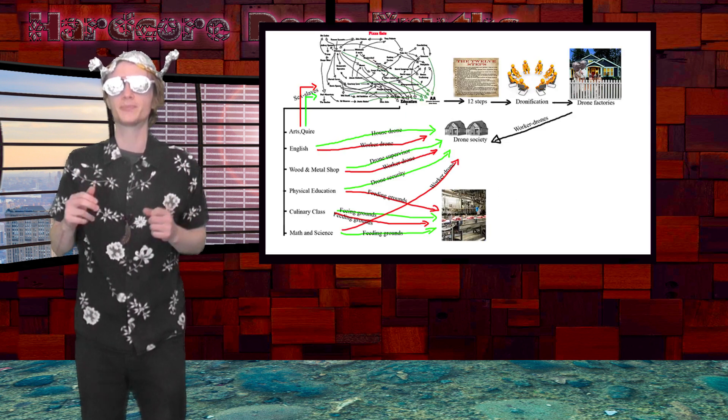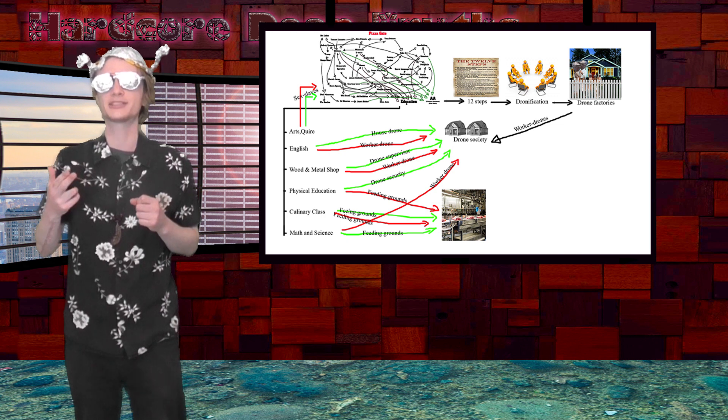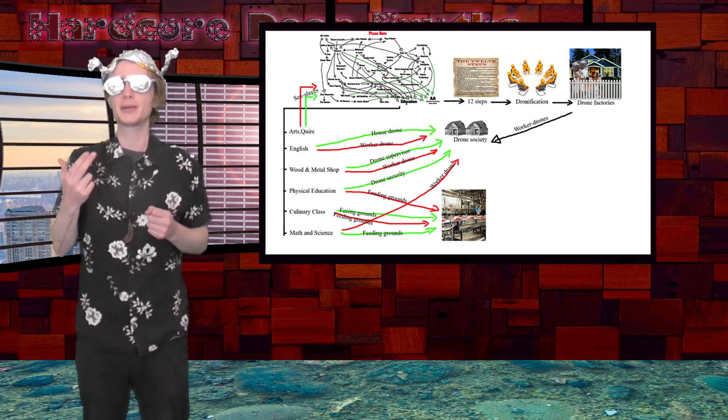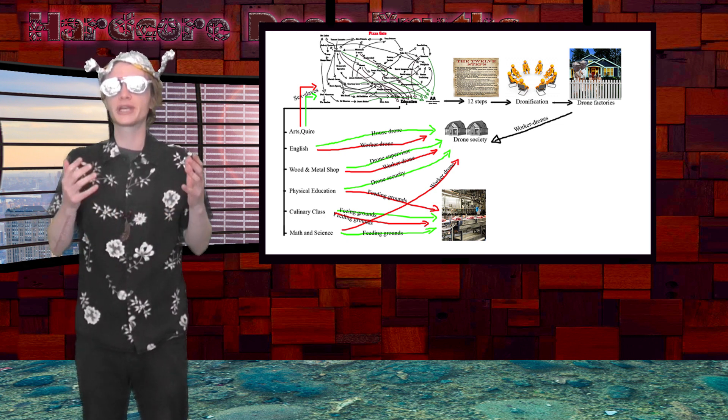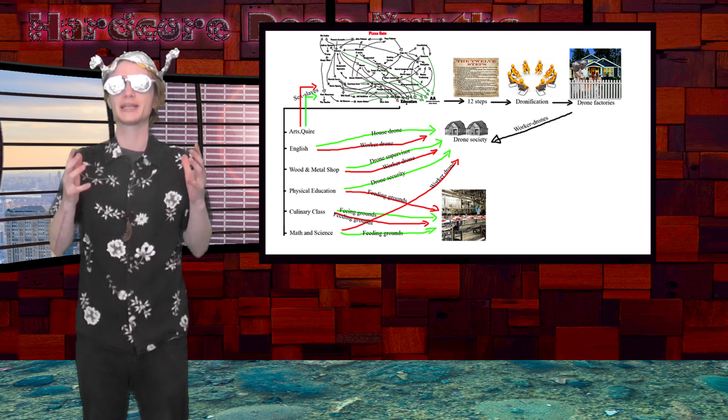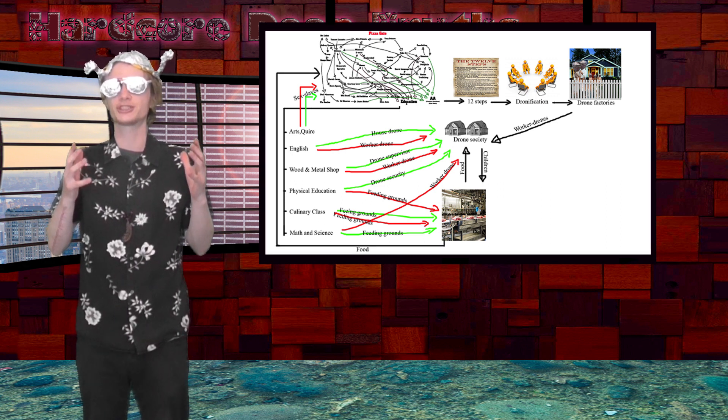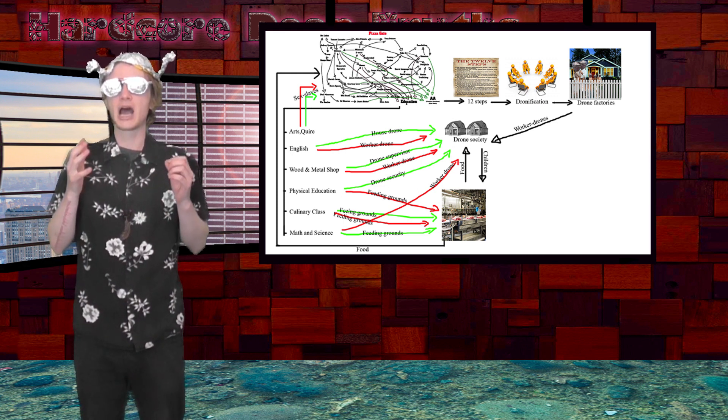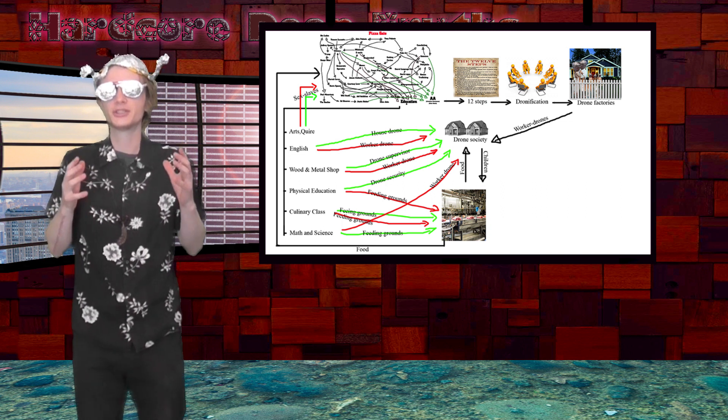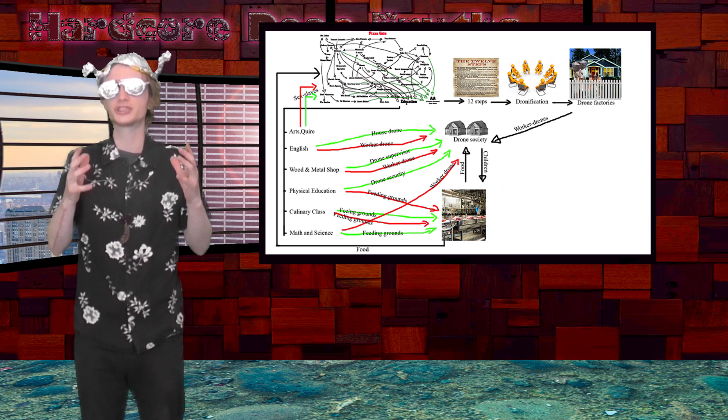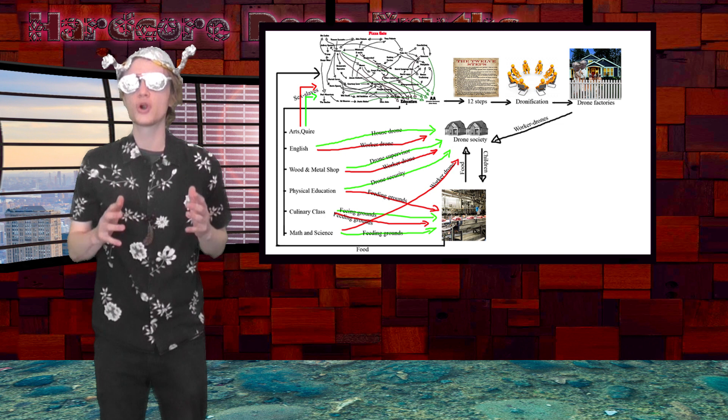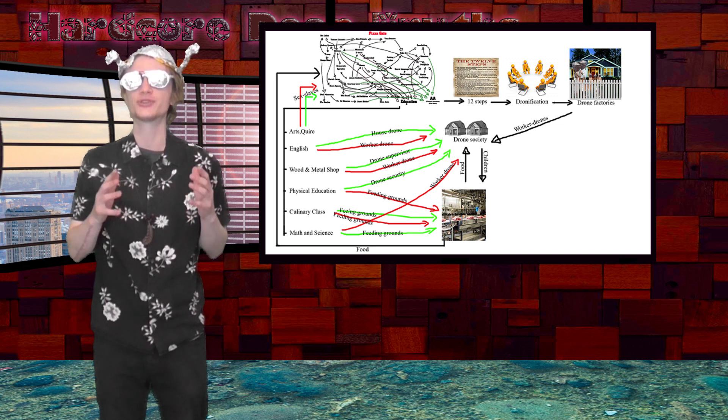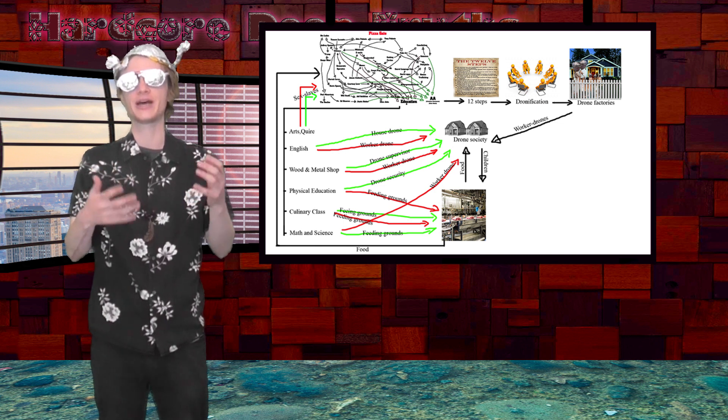The goal of education is to take the well-adjusted people and brainwash them into being drone supervisors, sex slaves, and babies. It works together with other departments to create a drone society aimed at feeding the draconians running pizza gates. Now, as I said, it works together with education to create a drone society. AA creates drone workers led by the educated drone supervisors and the drone security force from the athletic class.